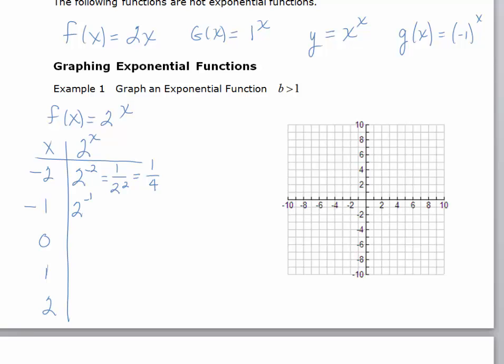If we do 2 to the negative 1, that would be 1 over 2 to the first power, equals 1 half. 2 to the 0 equals 1, 2 to the 1 equals 2, 2 to the 2 equals 4, and let's graph this over to the right.